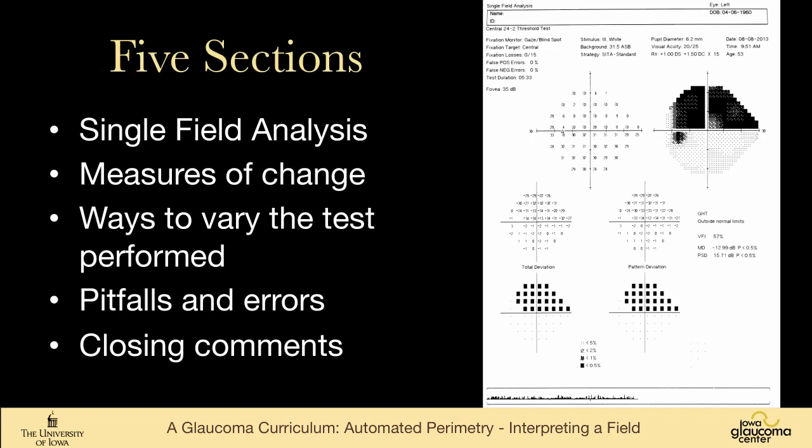I'm going to break this into five sections: looking at a single field analysis, looking at some measures of change, ways that the test can be varied to get different information, pitfalls and errors, and things that can really trip you up in looking at a visual field. And then I'll just have a few closing comments.